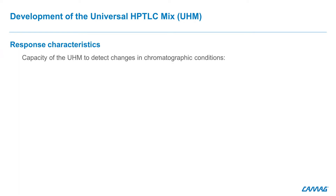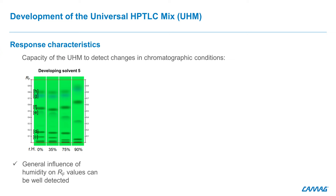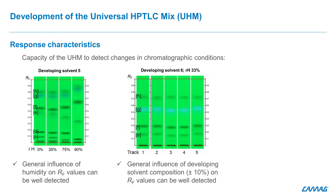The activity of silica gel as adsorbent is affected by the relative humidity of its surroundings. The example shown illustrates a case in which the relative humidity affects the selectivity of each substance differently, either decreasing or increasing RF. The response characteristic of the UHM clearly detects when the activity of a plate deviates from that expected when adjusting to relative humidity of 0.5%, 33%, 75%, or 90%. This can, for example, happen if the wrong activation procedure was employed. A ±10% variation of each constituent solvent was applied to the composition of developing solvent toluene/ethyl acetate 90:10.